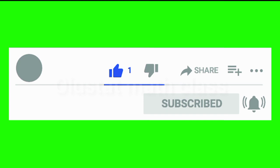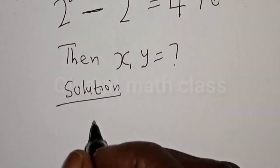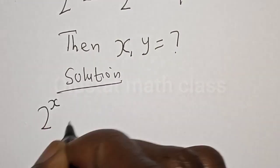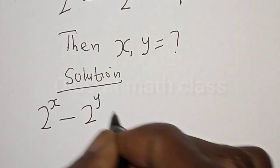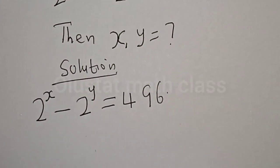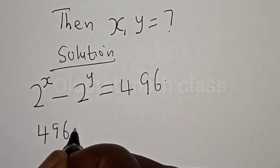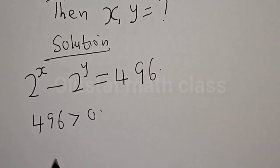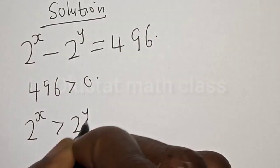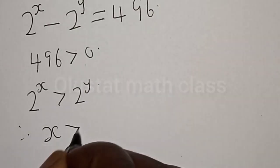Solution. We have the given equation: 2 raised to power x minus 2 raised to power y is equal to 496. From this equation, 496 is greater than 0. Also, 2 raised to power x is greater than 2 raised to power y. Therefore, x is greater than y.